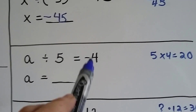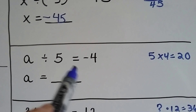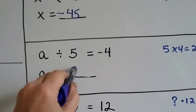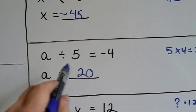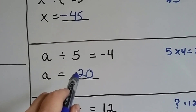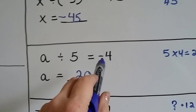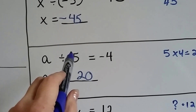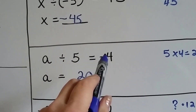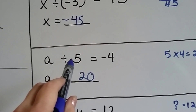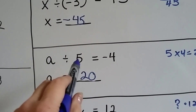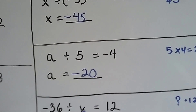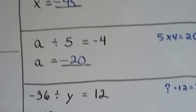a divided by 5 equals negative 4. We use the inverse: 5 times 4 is 20, so the answer is 20. But the quotient is negative 4 and the 5 is positive. How do we get a negative answer with a positive in the equation? Unlike signs — so the 20 is going to have to be negative, making them unlike and giving us a negative quotient.